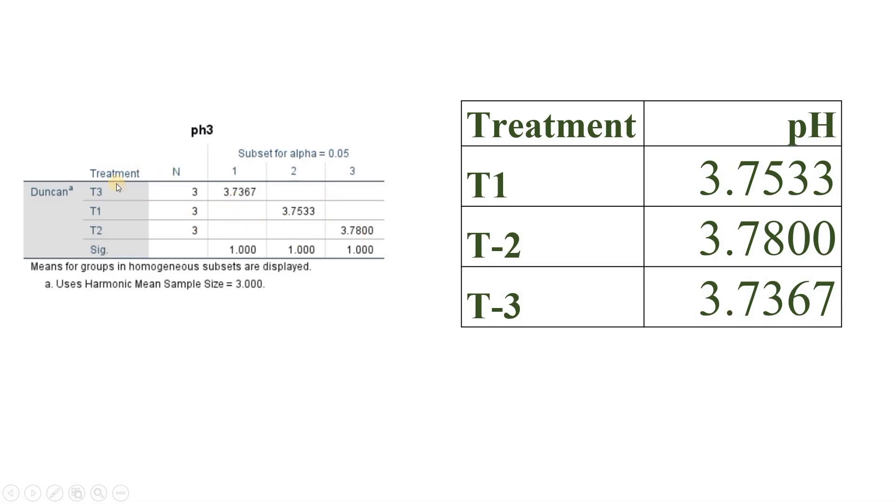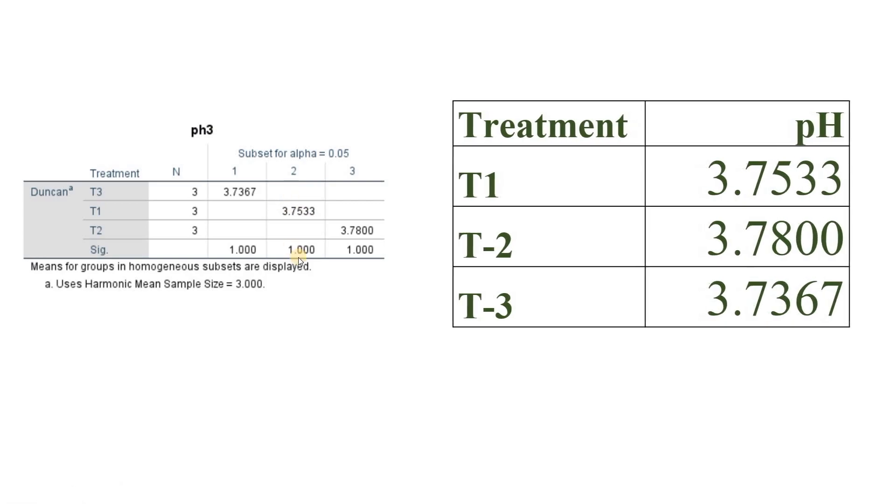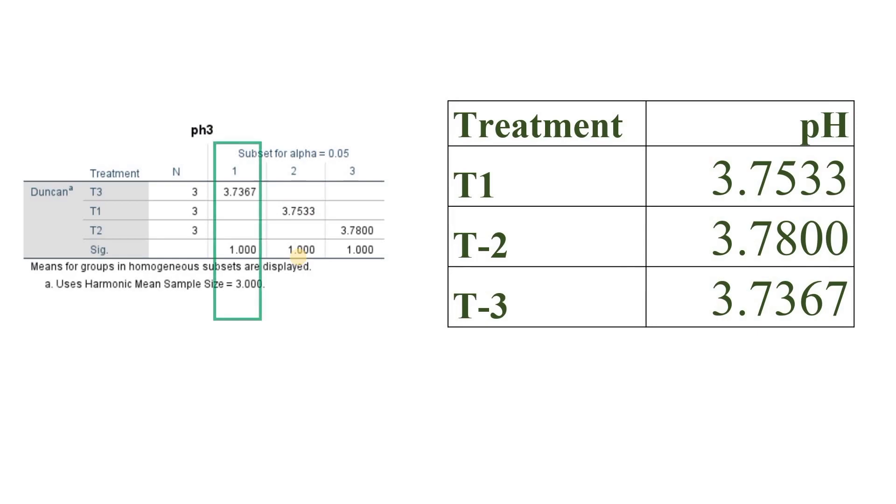Here I have three treatments and the effect of treatment on the pH level. So I have got three columns. We can see that here we have three columns and we can name each column.